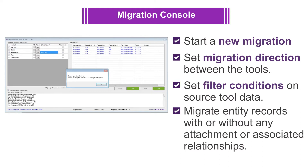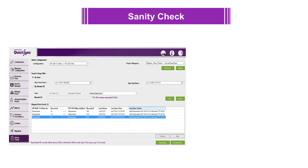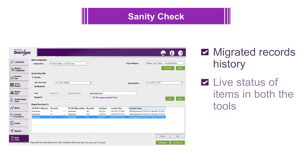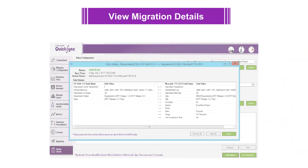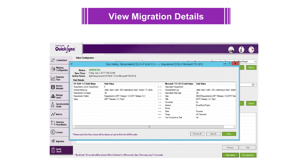Entity records can be migrated with or without their attachments and associated relationships. On successful completion, a message window pops up flashing a success message. The sanity check feature provides migrated records history, live status of items in both tools, and allows manual sync operations if needed. You can select an entity record row from the migration results to see the details of associated fields and their corresponding values.